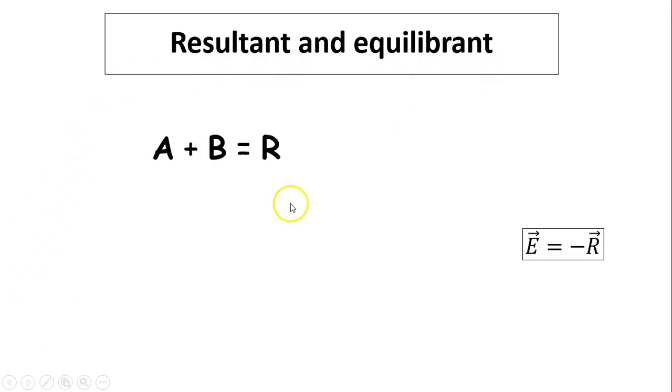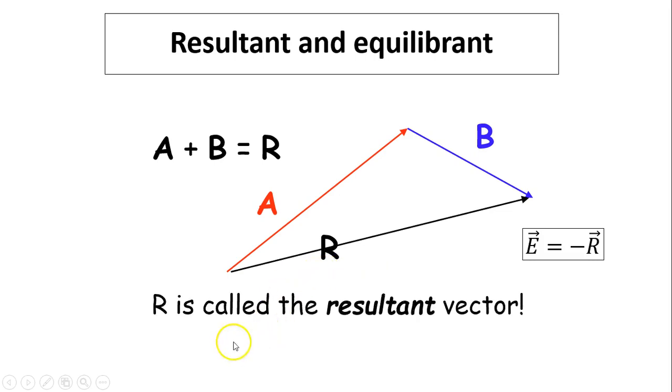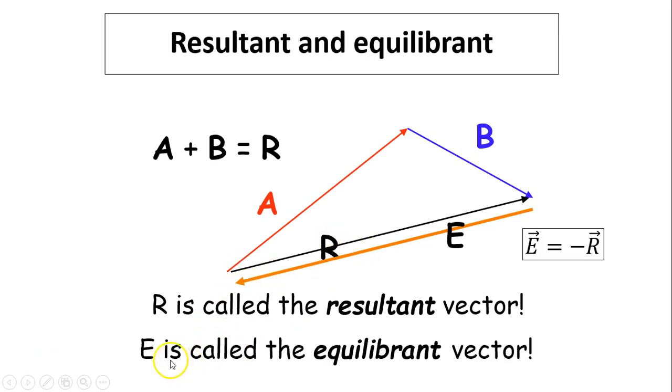Resultant and equilibrant. So here is A and B gives you R. This R is the resultant. R is called the resultant factor. Equilibrant is the opposite to resultant. Same size, but it's opposite. In the opposite direction. That E is called the equilibrant. So E equals to negative R.